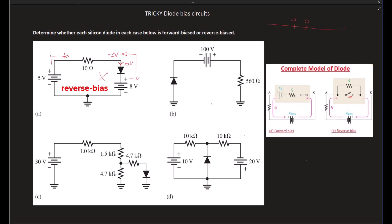Moving on to Case B: here we have one power supply with a series resistor. There is a small voltage drop across the resistor, but the key observation is that the anode of this diode is connected to ground — zero volts. The cathode side is at minus 100V. Zero volts is clearly greater than minus 100V, so this particular diode is indeed forward biased.